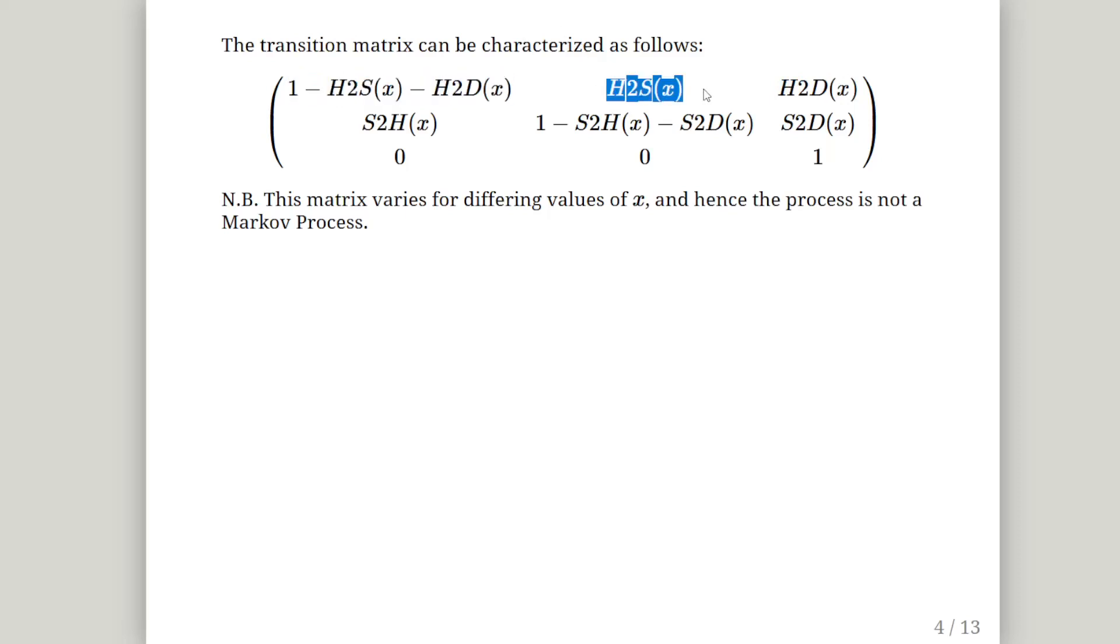This is the first probability that we're given: healthy to sick and healthy to dead. So the total row probability has to add up to one. So the first cell, the top corner here, has to have this value.